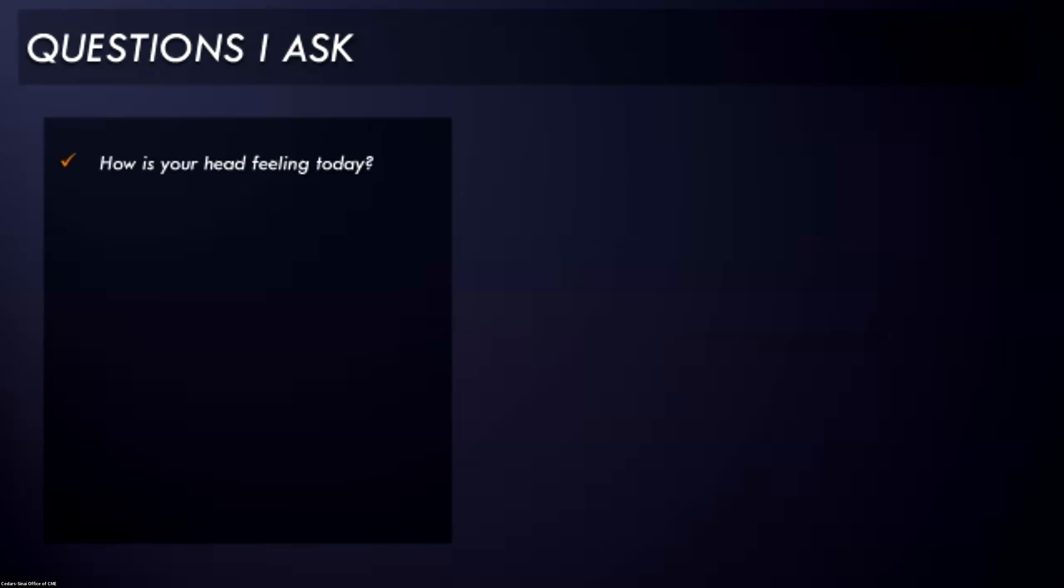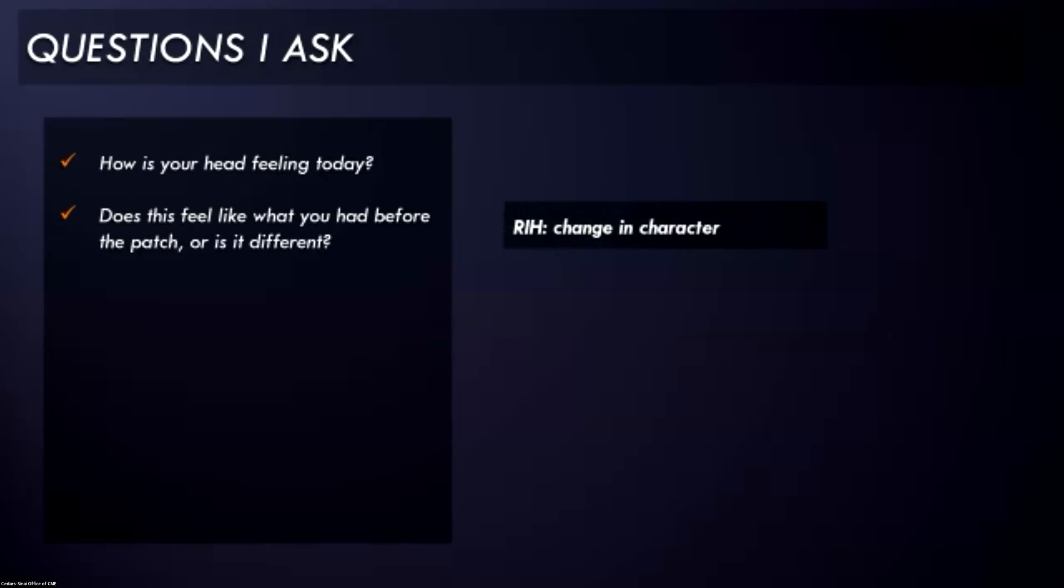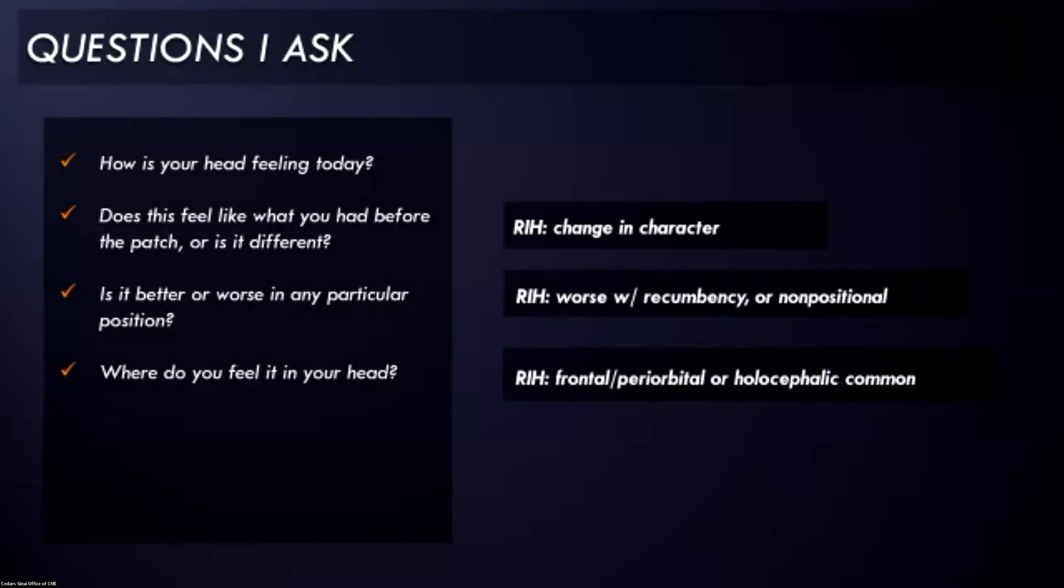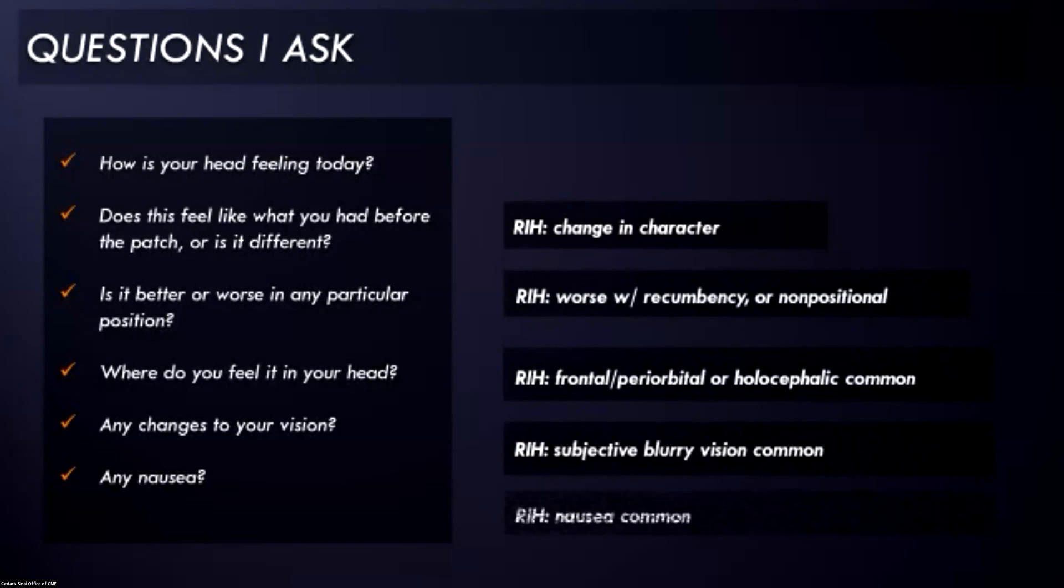So what are the questions that I ask? I usually just start out by asking, how's your head feeling today? This is after they've had their procedure. Just sort of an open-ended question. If they say they have headache, I ask them, does this feel like what you had before the patch or is it different, right? Because we know that rebound intracranial hypertension often has a change in character. Is it better or worse in any particular position? And I try not to ask too many leading questions. But if it's worse when laying down or really has lost the positional component, I think about that as a change in the character because rebound is worse with recumbency or is non-positional. Where do you feel it in your head to get a sense of where it's located very often, but not always? Rebound is worse in the frontal or periorbital locations. Any changes in the vision and any nausea, because those are two common complaints as well.